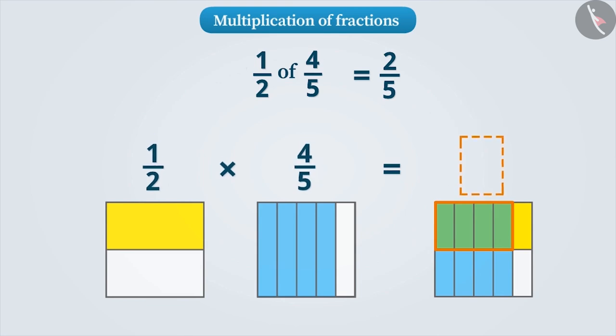As you can see, there are a total of 10 parts out of which 4 are common shaded parts. So, this part is 4 tenths of the full square.